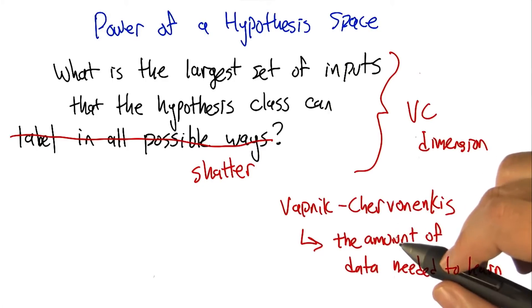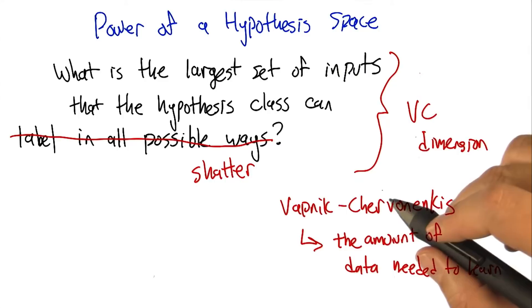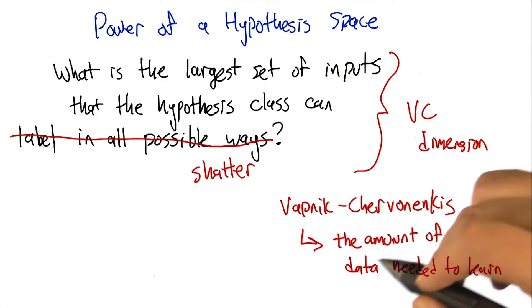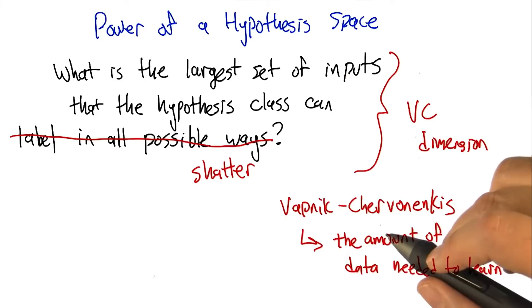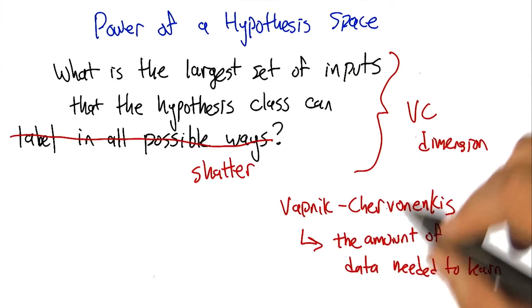So that's really cool. It really connects things up beautifully. So I think what would be a really useful exercise now is to look at various kinds of hypothesis classes and for us to measure the VC dimension. Okay, sounds like fun.